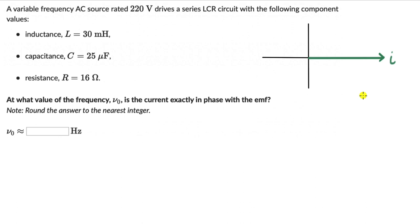We know that the voltage across an inductor leads the current by 90 degrees. The voltage across the capacitor lags the current by 90 degrees. And lastly, the voltage across the resistor is in phase with the current — there is no lead or lag. The vector addition of these three voltages gives us the resultant supply voltage, which could lie anywhere in these two quadrants.